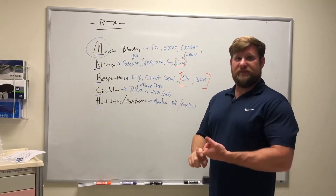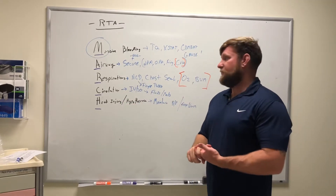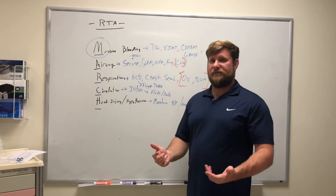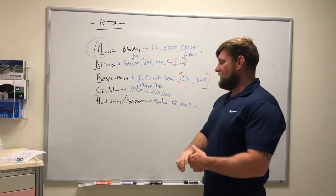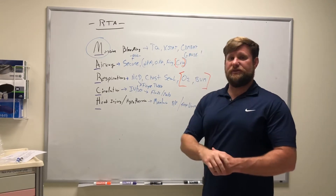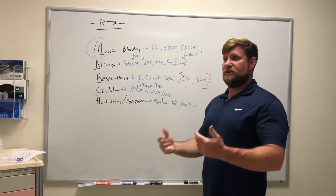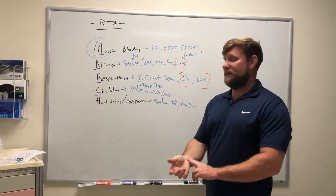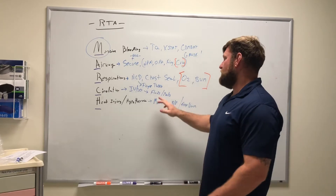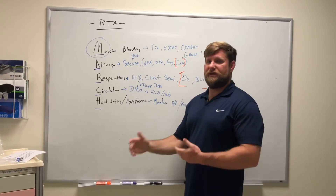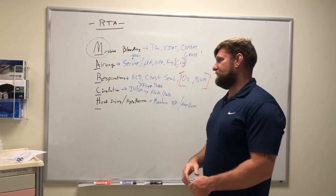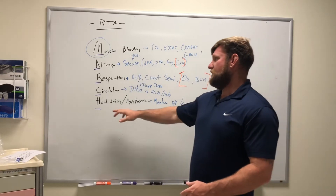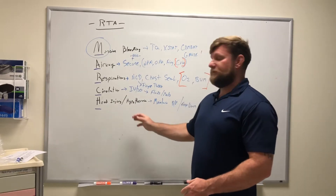For circulation, I'm going to establish an IV — preferably 18 gauge — or get an IO. I'll administer fluids to keep the systolic blood pressure above 90, maintaining a radial pulse, and give medications as appropriate: ketamine, fentanyl, pain management protocols.